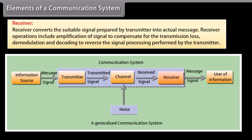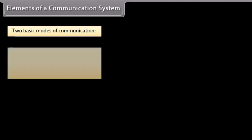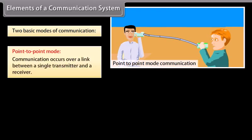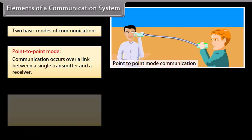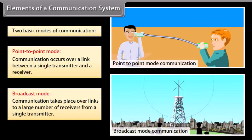The receiver converts the suitable signal prepared by the transmitter into the actual message. Receiver operations include amplification of the signal to compensate for transmission loss, and demodulation and decoding to reverse the signal processing performed by the transmitter. There are two basic modes of communication: point-to-point mode, where communication occurs over a link between a single transmitter and receiver, and broadcast mode, where communication takes place from a single transmitter to a large number of receivers.